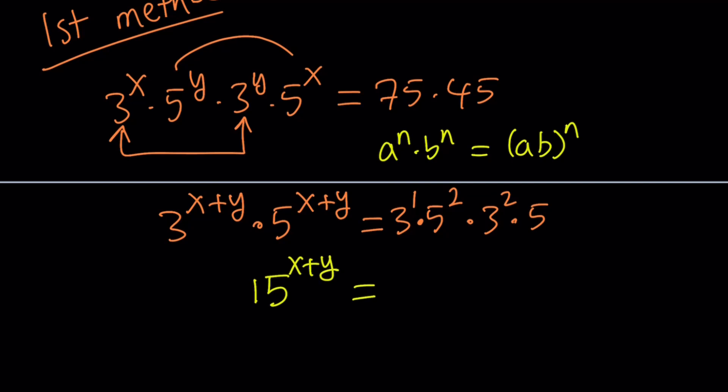On the right hand side, I get 3 to the power 1 times 3 to the power 2, which is 3 to the third, multiplied by 5 to the third because I'm also adding the exponents here. And this can be written as 15 to the power 3.